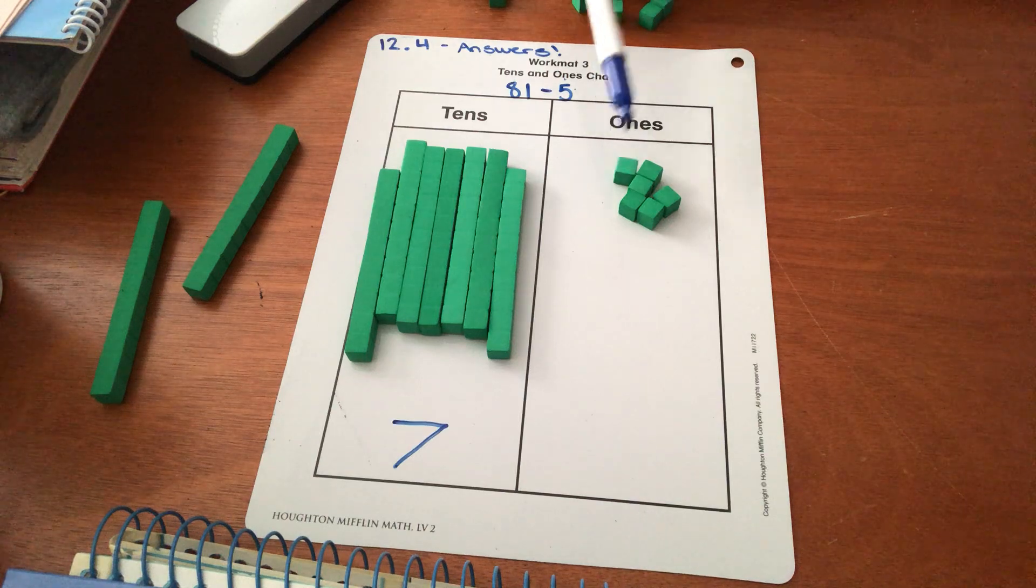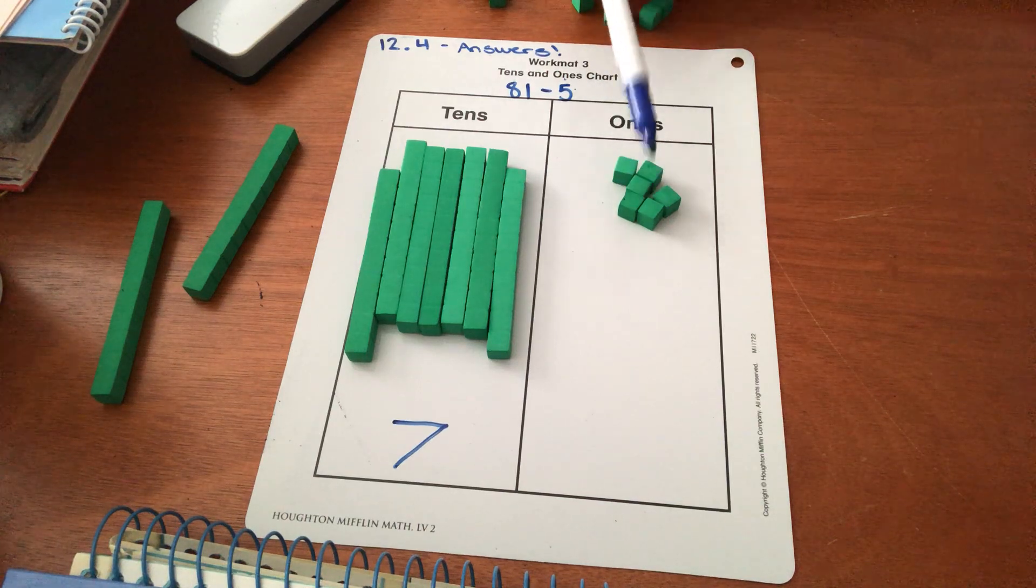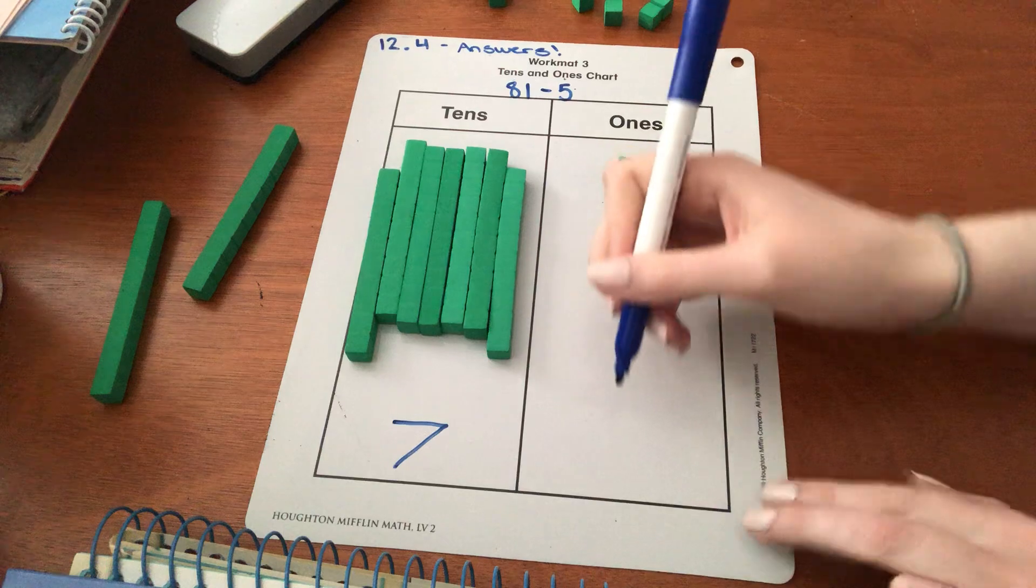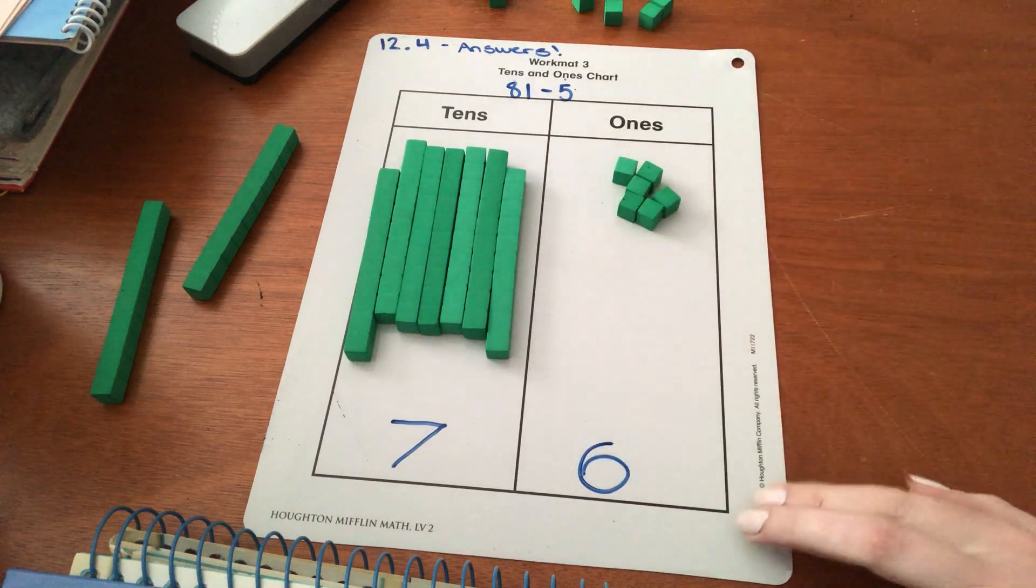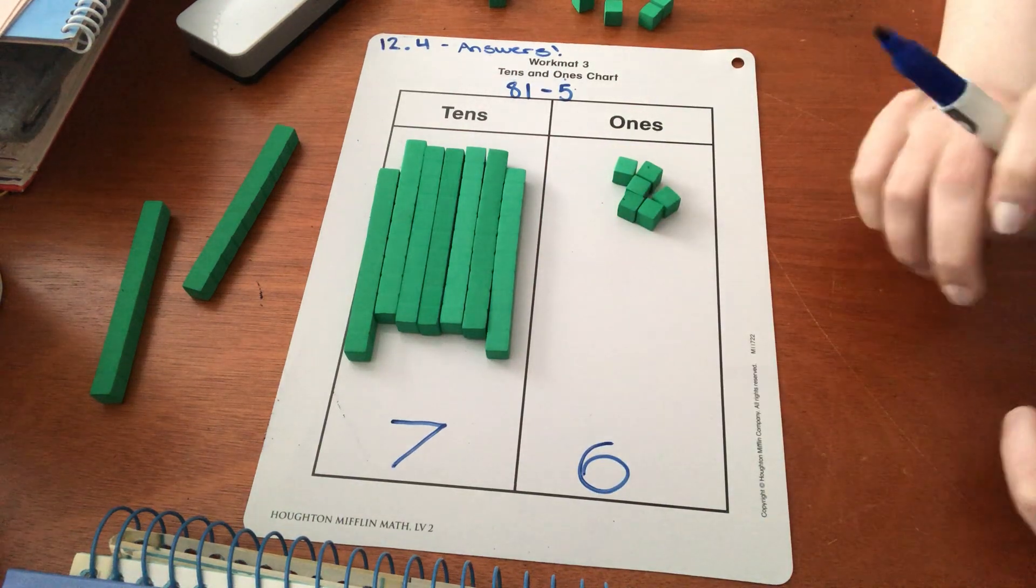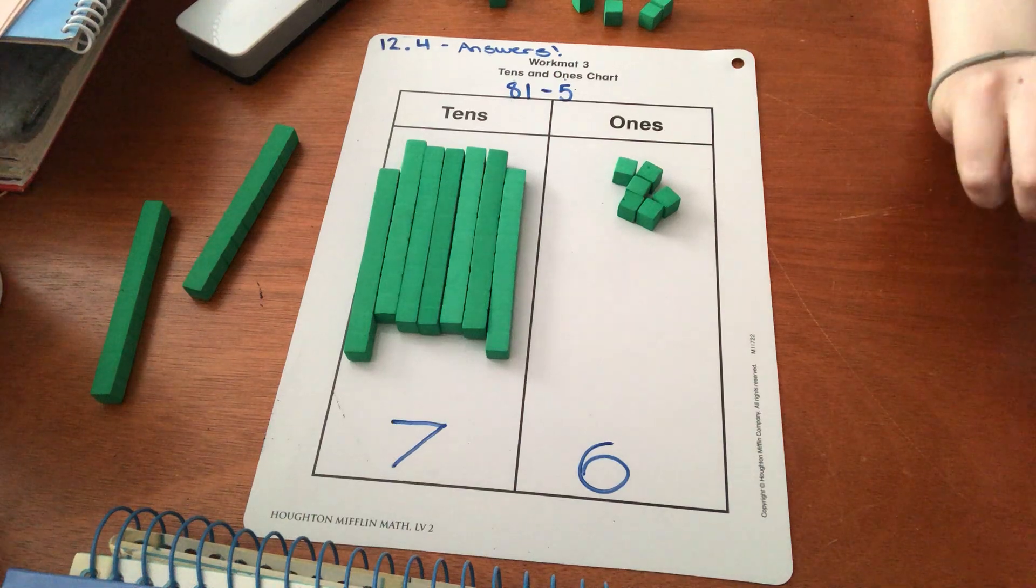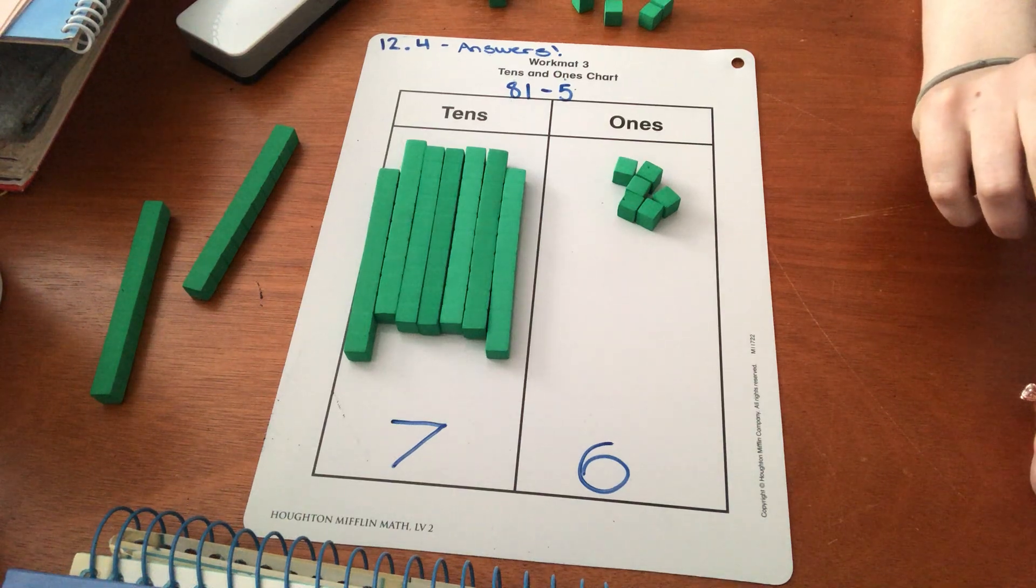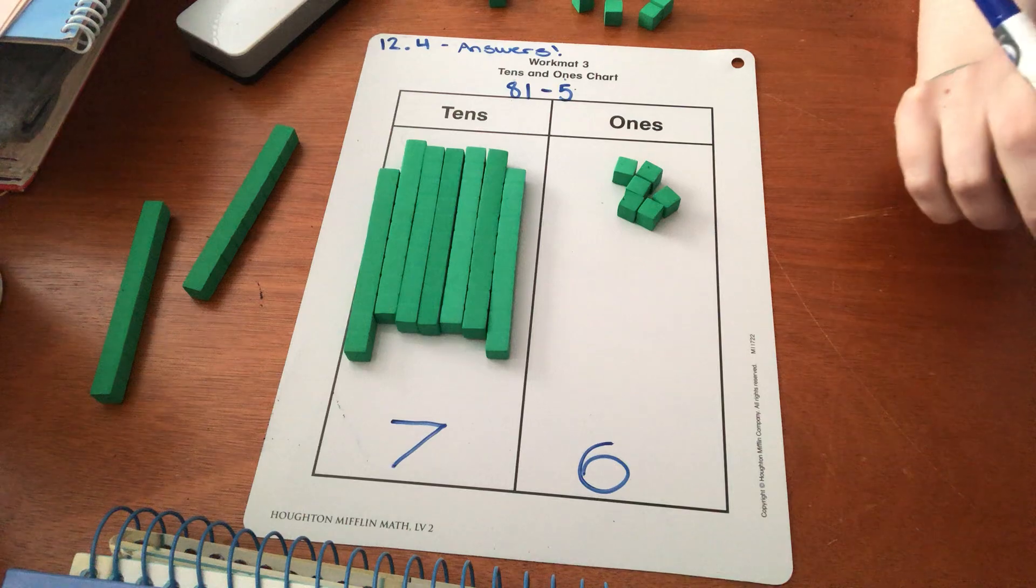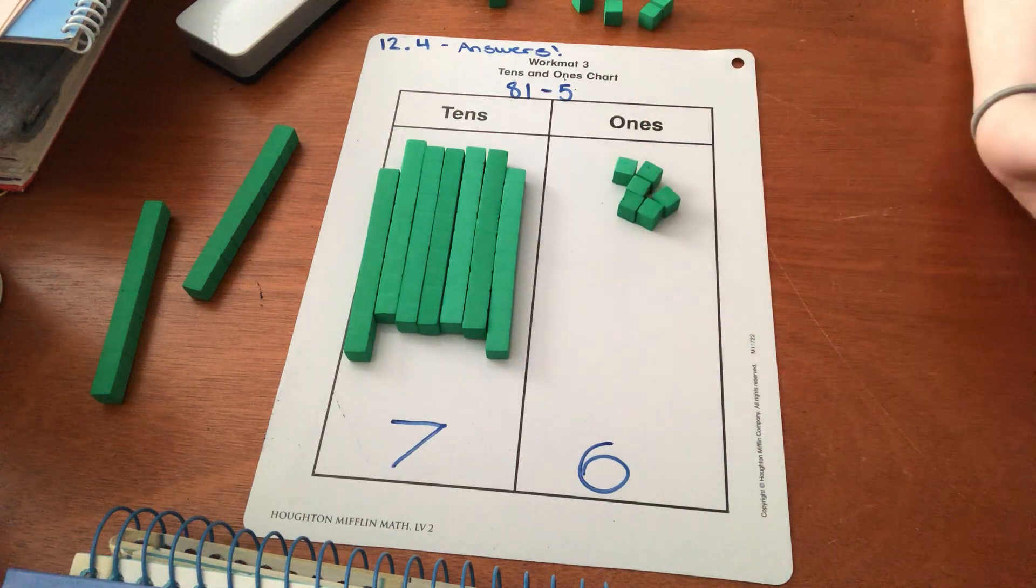And how many ones do I have over here? Let's count together. One, two, three, four, five, six. Amazing job. Seven tens and six ones. What is our difference? Nice. Amazing. 76 is our answer.